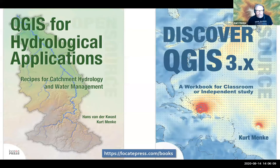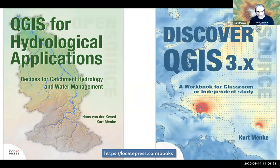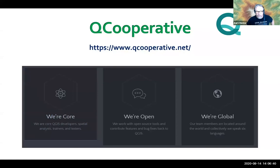I'm also a QGIS author. My most recent book, co-written with Dutch hydrologist Hans van der Quast, is QGIS for Hydrological Applications. Before that I published Discover QGIS 3X, a large 400-page workbook with a thorough treatment of QGIS. Both are published with Locate Press. I'm also part of the Q Cooperative, which includes several QGIS core developers and offers QGIS support services — including custom plugins, new features for QGIS or QGIS Server, and training.